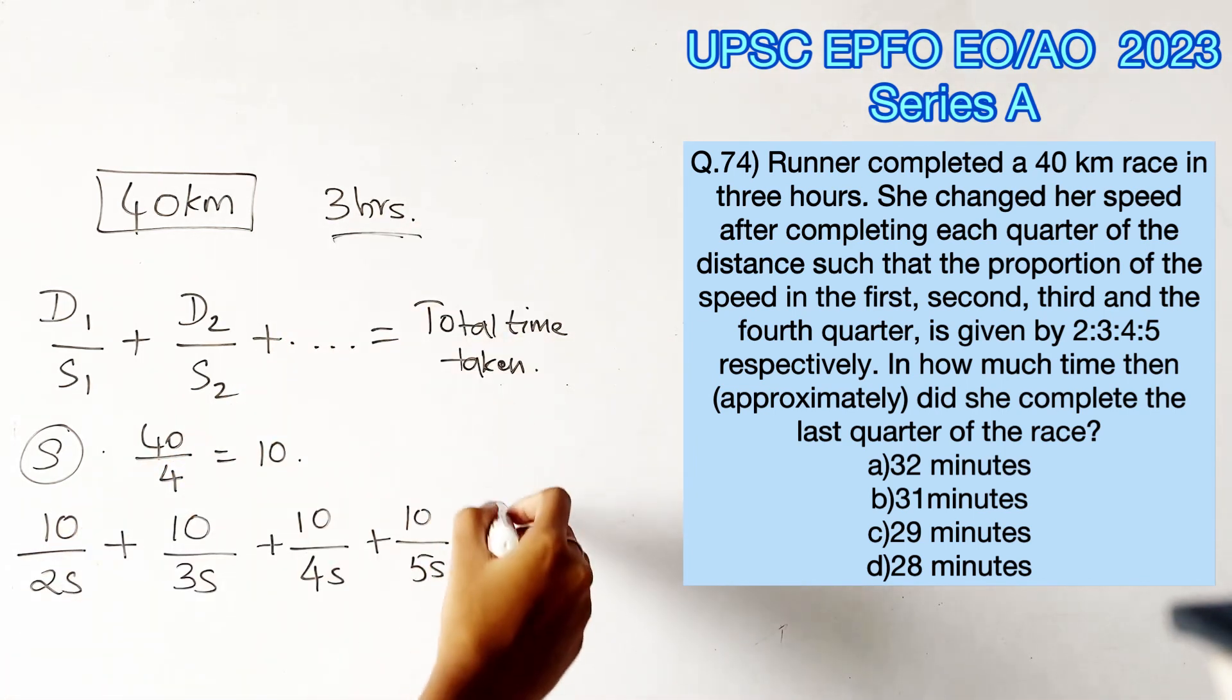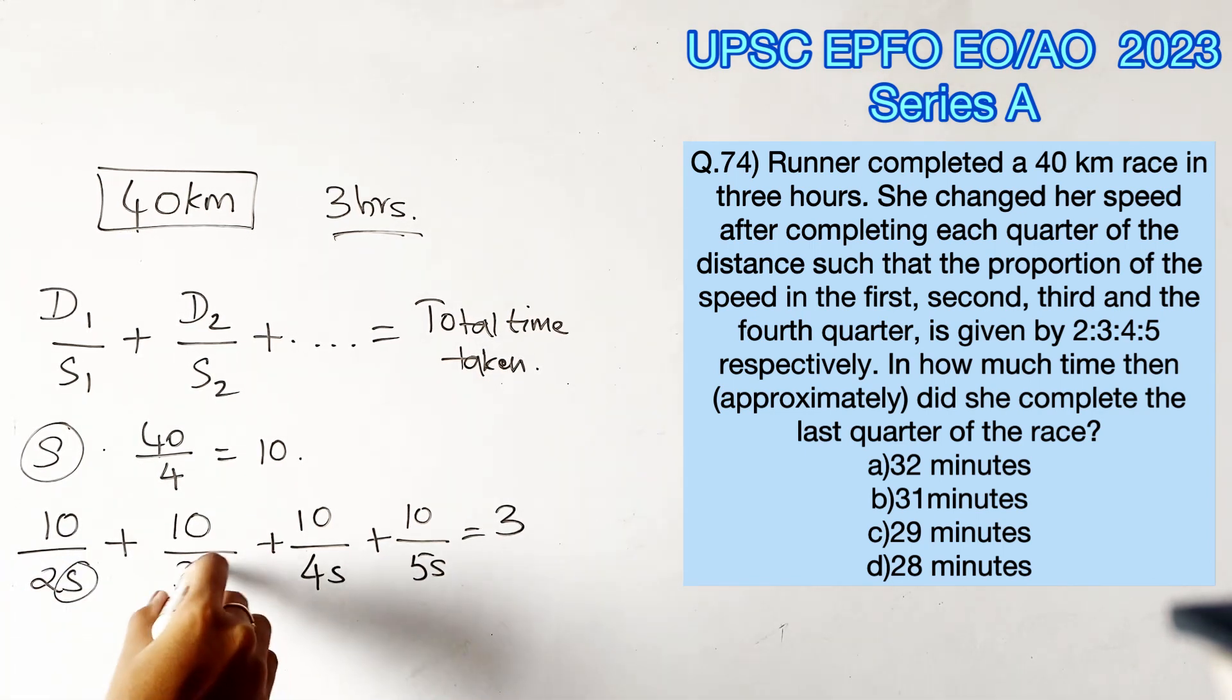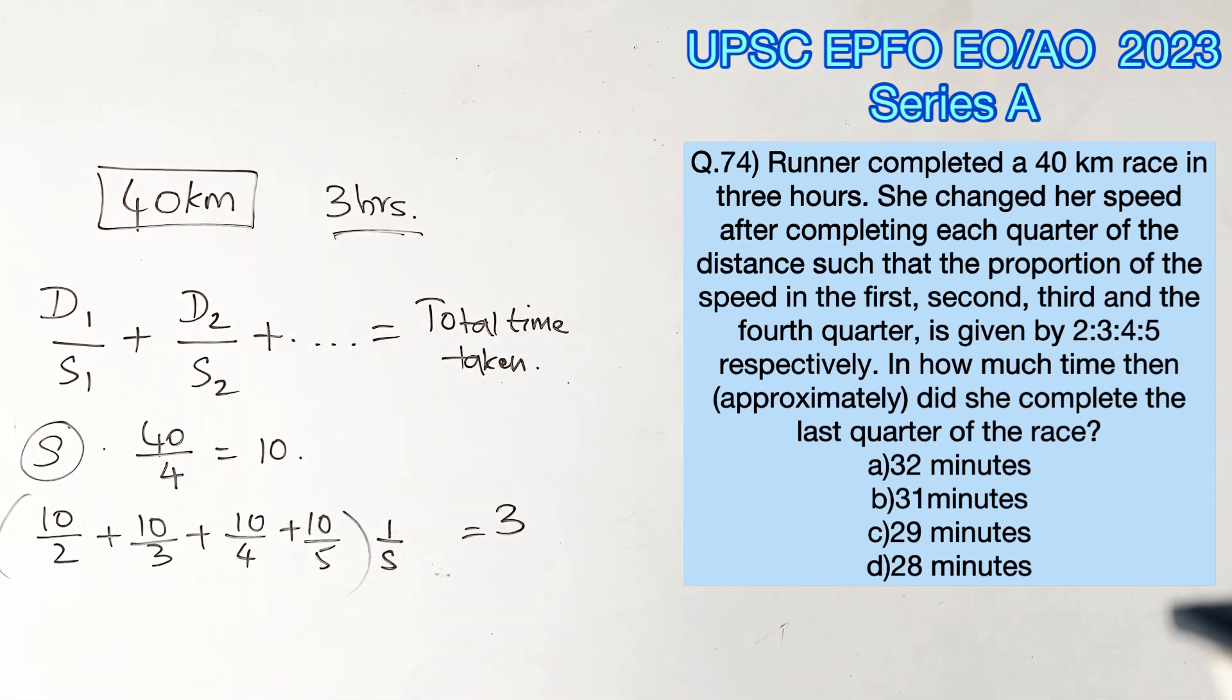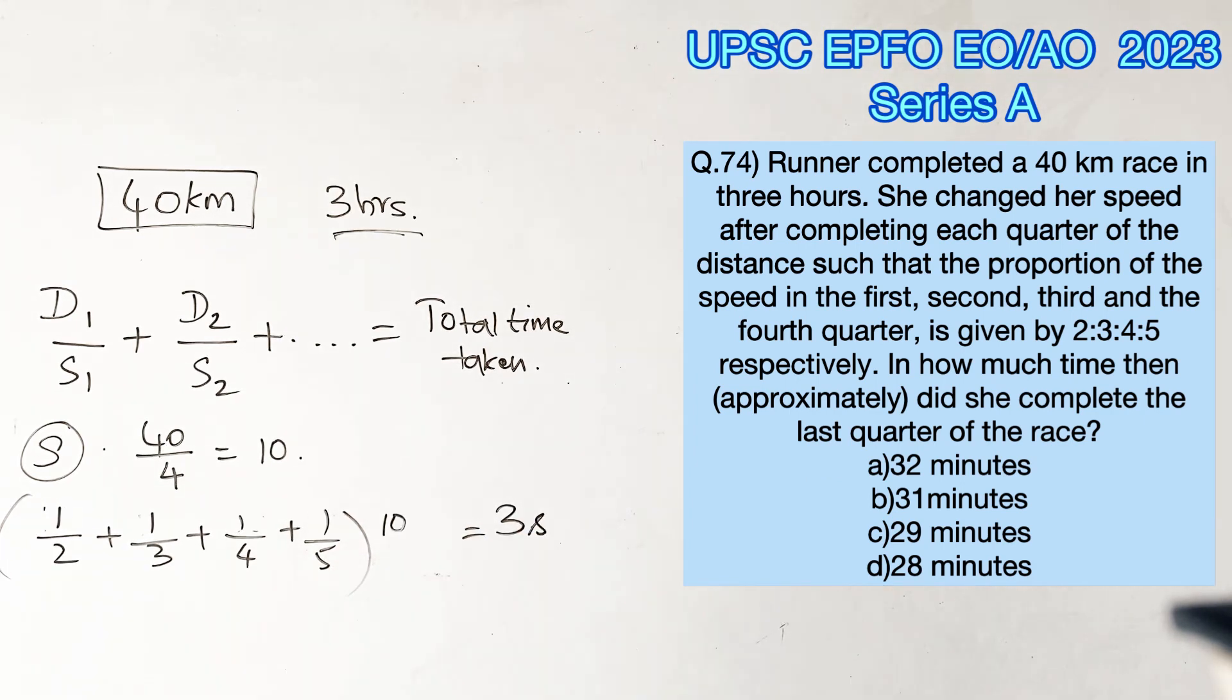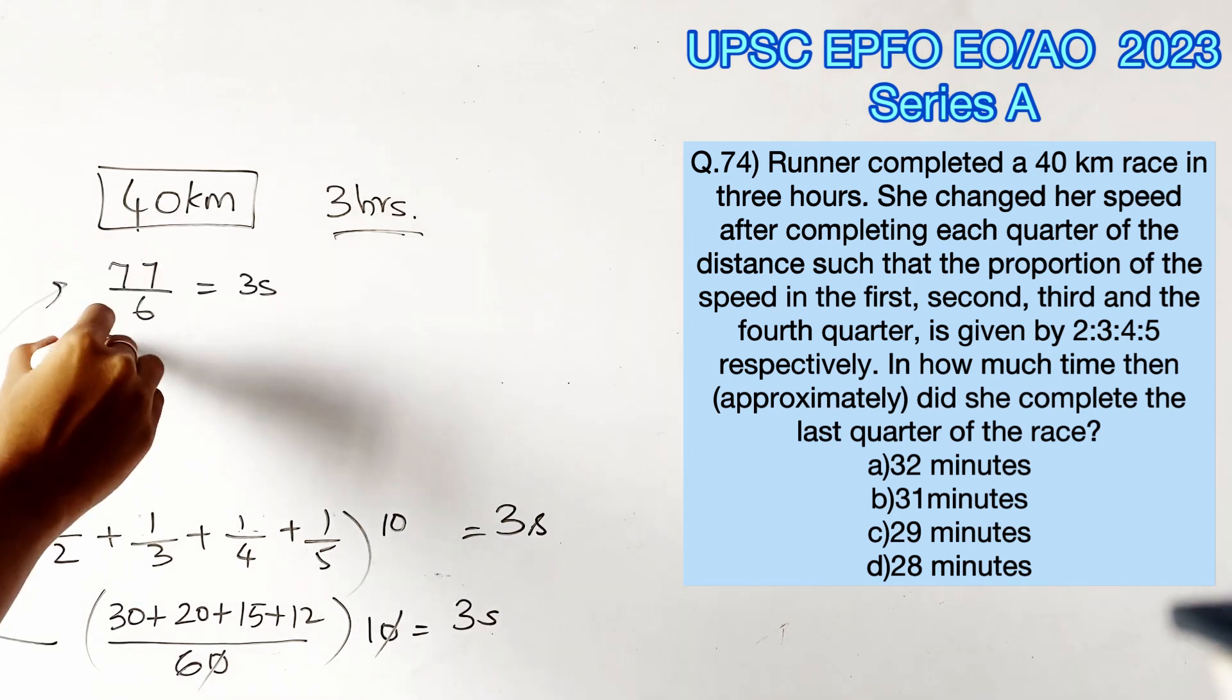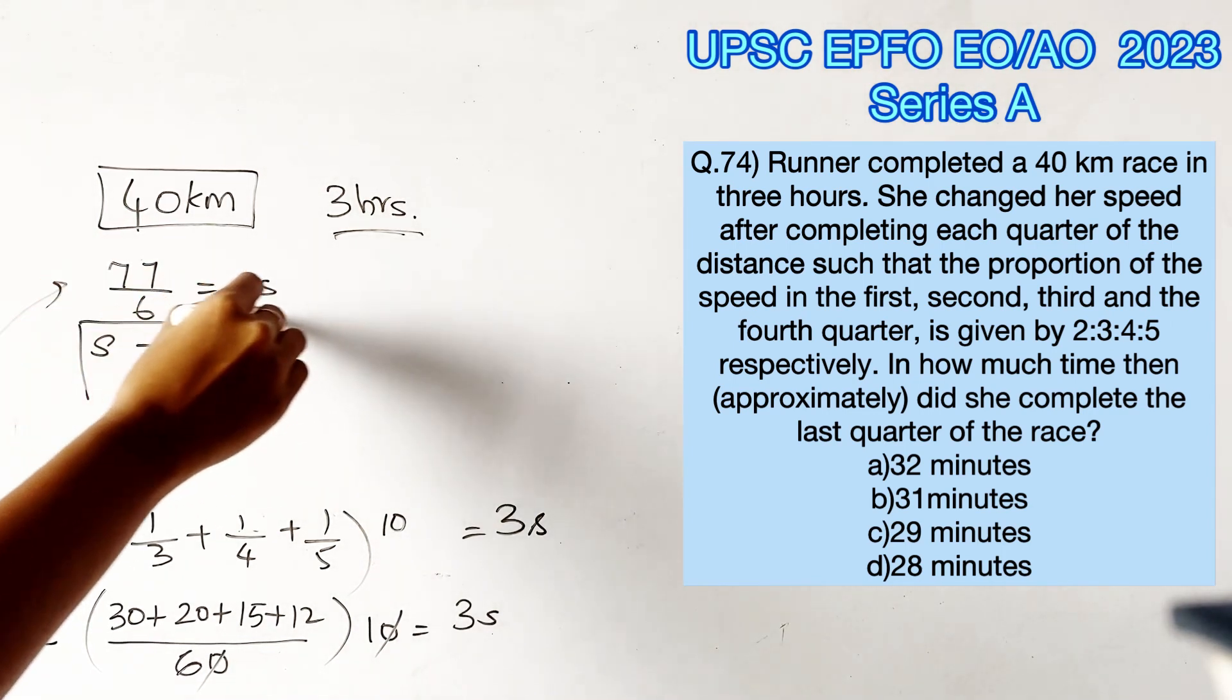Since s is common in all the terms, let's take s commonly outside. Taking s to the right hand side, 10 is also common in all the terms so we can take it outside. Now taking LCM of 2, 3, 4, 5, we get 60. Solving the values with the LCM we get 77 by 6 equals 3s. Equating for s, we get 77 by 18.